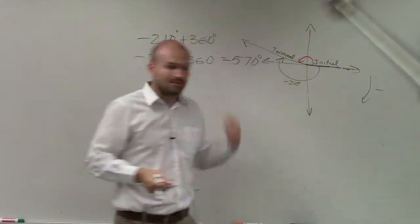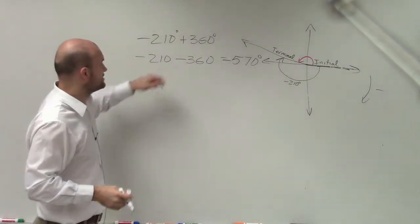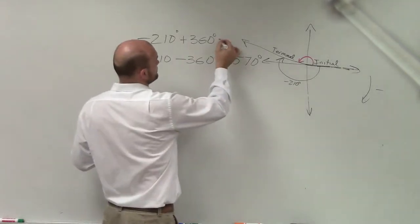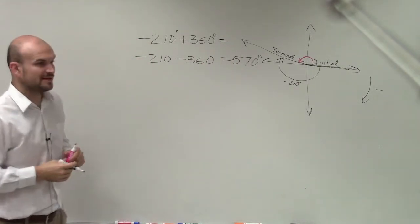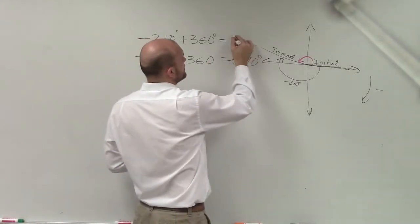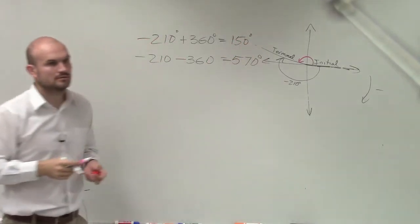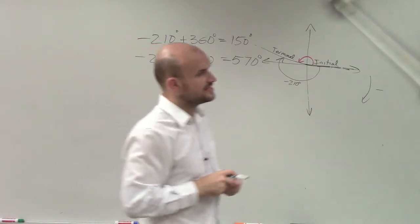Well, if all the way around a circle is 360, if I take 210 plus 360, that's going to give me a positive 150 degrees. OK? So does everybody see?